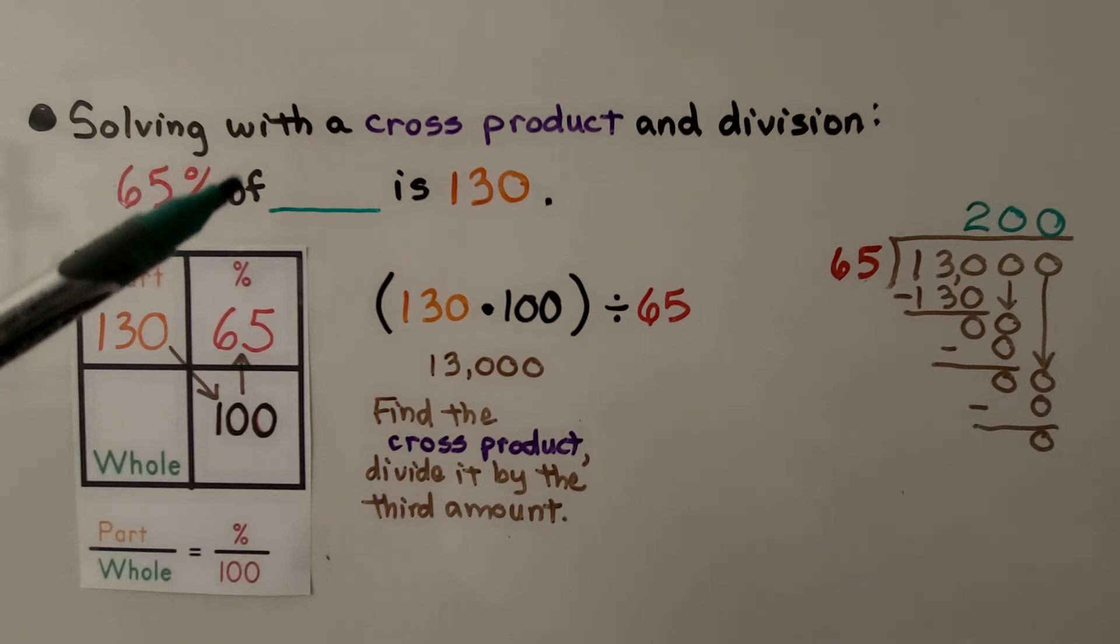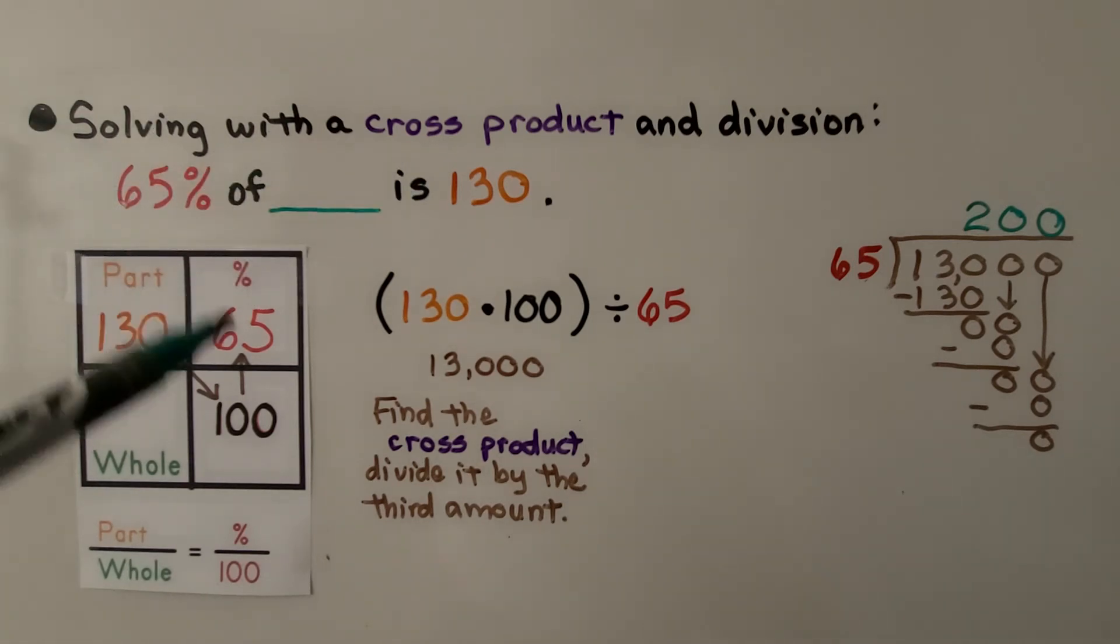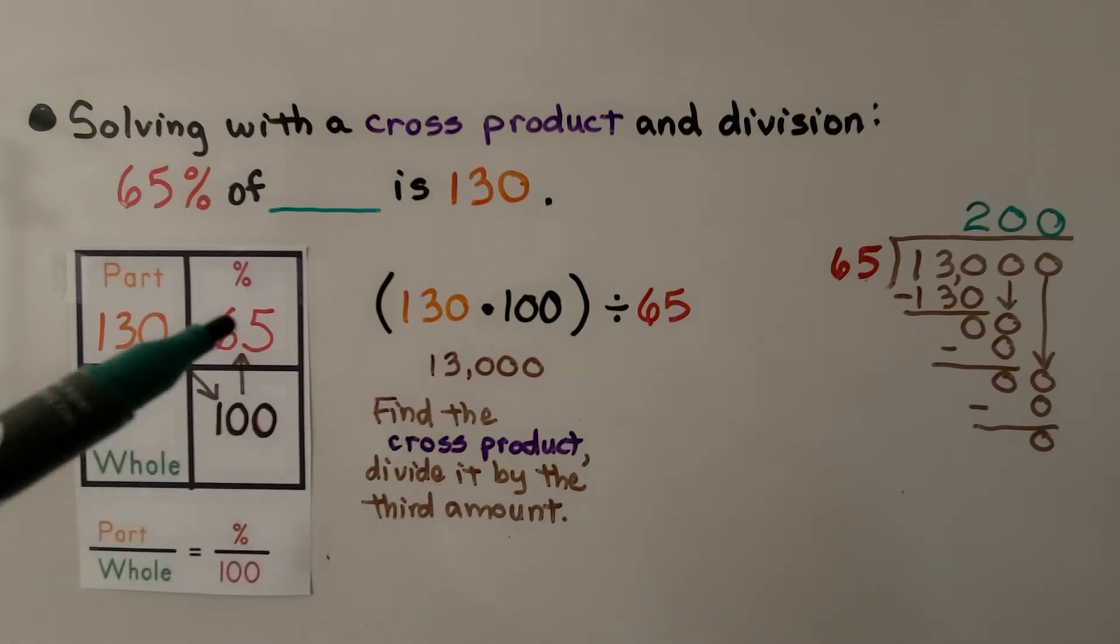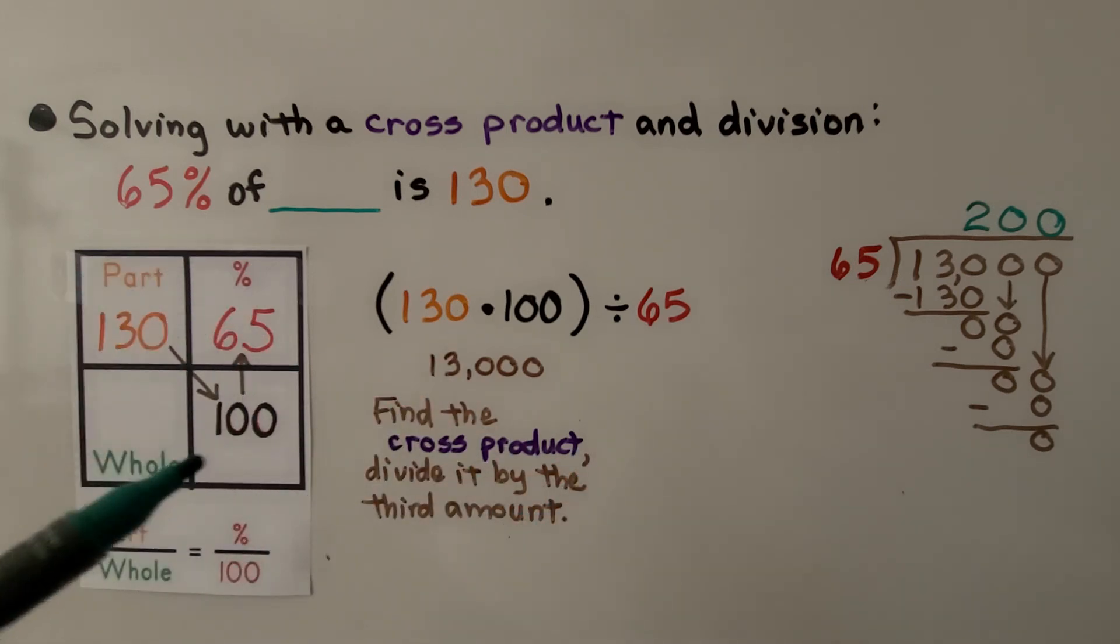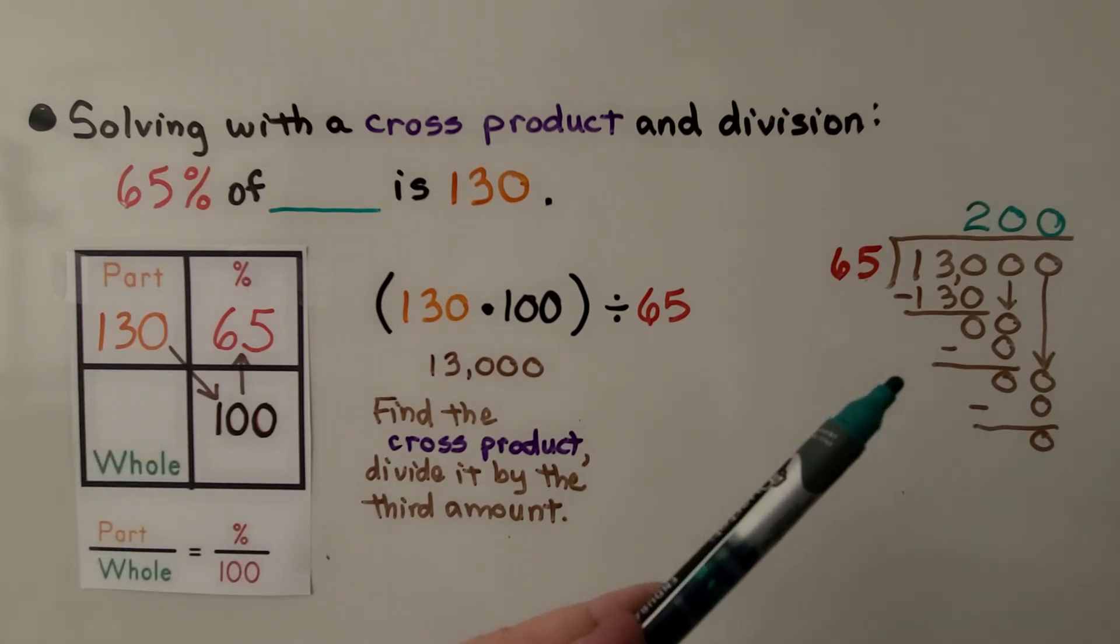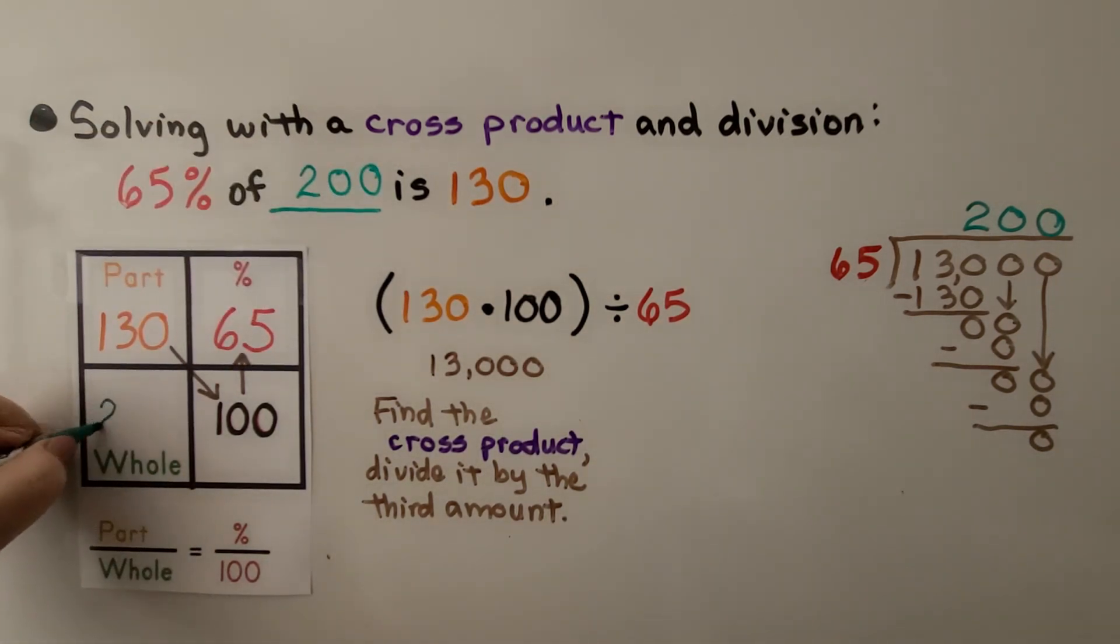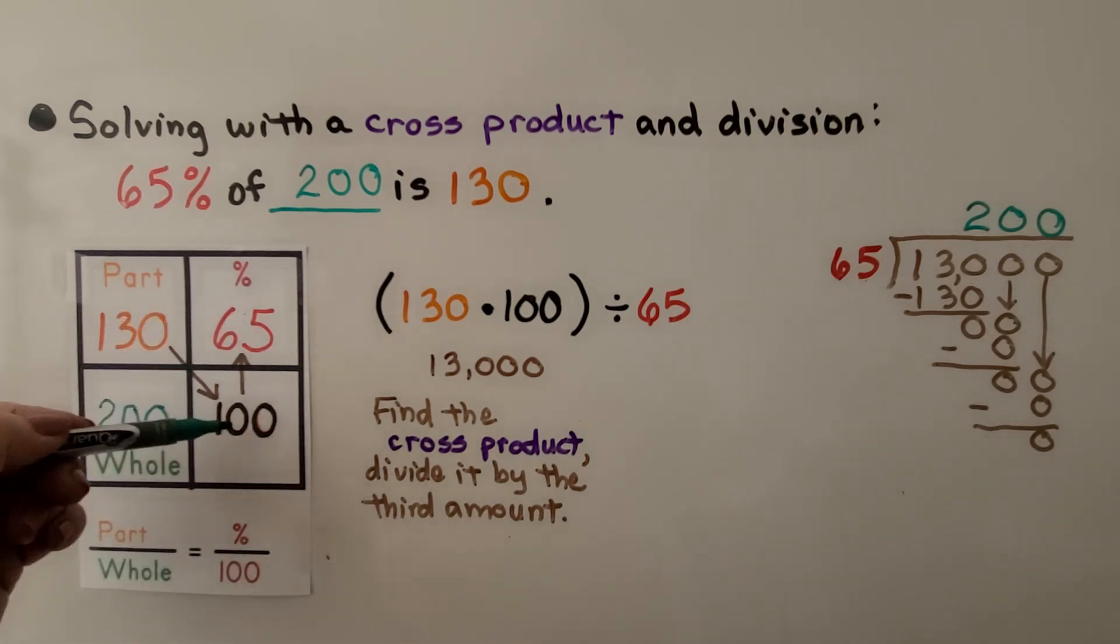We had 65% of some number is 130. We can use our little grid here. We put our part—that's 130. We don't know the whole. We know the percent is 65 over 100. So we have 130 times 100. That's 13,000. And then we divide it by 65. And that will give us the whole, the missing value. We do 13,000 divided by 65 and we get 200. So we know this is 200.